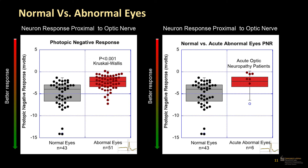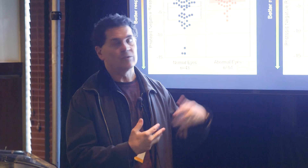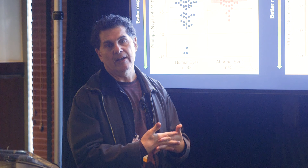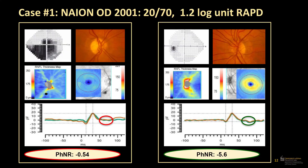I want to show a couple of patients because we learned something interesting. I picked out some patients here — these were six patients who had acute optic neuropathy, within the first two weeks, which is how I define acute in this study. The other cases may have had it for a while. There was a pretty acute effect on the response of that neuron. I'm going to show one patient and then a second patient that we treated with steroids that I thought was interesting.